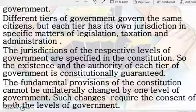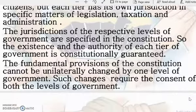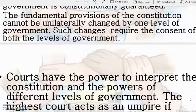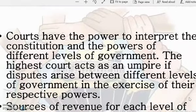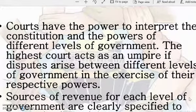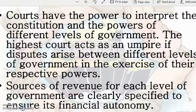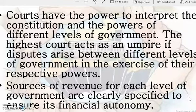Our constitution guarantees that none of the levels of government can bend the rules for their own benefit. As we know, our country is a democratic country, so whatever decisions the government takes should benefit the people — that is the sole motto of our constitution. Courts also have the power to interpret the constitution and the powers of different levels of government, with the highest court acting as an umpire if disputes arise.